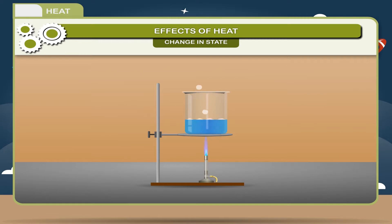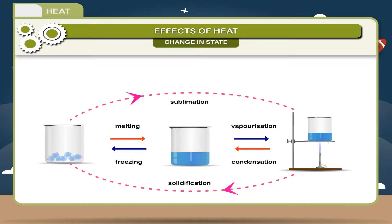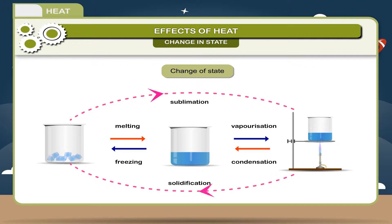When this liquid is further heated it starts boiling and changes to gaseous state. Conversely, when a material present in its gaseous state is cooled it loses heat energy and changes to liquid state. On further cooling it changes to solid state. The change of a substance from one physical state to another is called change of state.